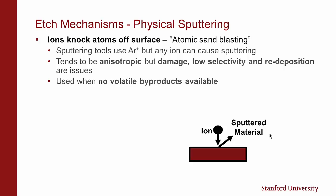We typically use physical sputtering where there are no volatile byproducts. We prefer using chemistry because chemistry gives a lot of advantages in terms of rate and profile control. But sometimes there's no byproduct that comes off the surface, so etching has to be all physical.